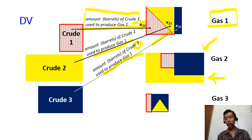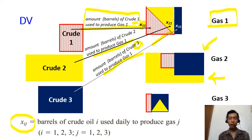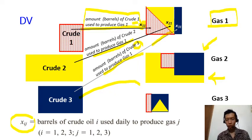To generalize, we name the variable xij, which means the barrels of crude oil i to produce gas j. For example, x11 means crude oil one to gas one, x21 means crude two to gas one, and x33 means crude three to gas three. This naming is intuitive — you go from crude oil i to gas j and the variable is named xij.